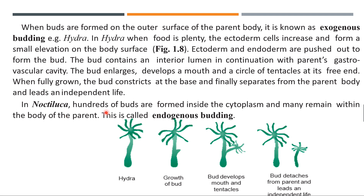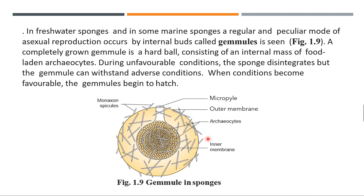In Spongilla, endogenous budding occurs — hundreds of buds are formed inside the cytoplasm and remain within the body of the parent. In freshwater and some marine sponges, a peculiar mode of asexual reproduction occurs involving internal buds called gemmules. A completely grown gemmule is a hard ball-like structure consisting of an internal mass of food-laden archaeocytes. During unfavorable conditions, the sponge disintegrates but the gemmule can withstand adverse conditions.